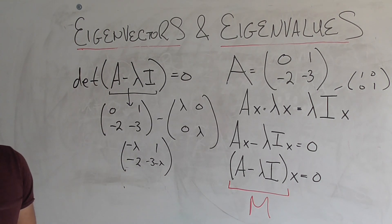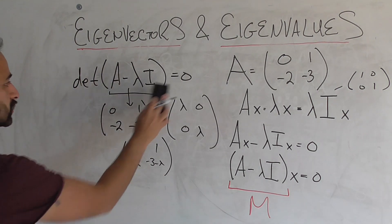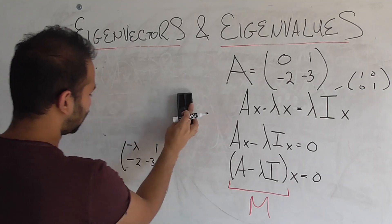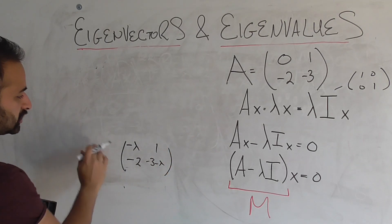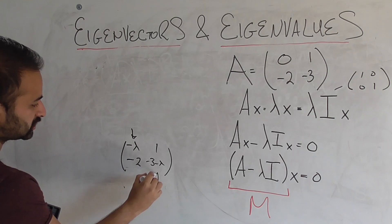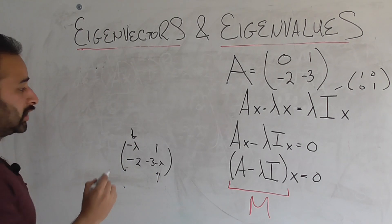Okay, 2 by 2 determinants are something we can handle. Remember, it's just this element times this element, so let's do that first. If we do that, we get 3 lambda plus lambda squared.